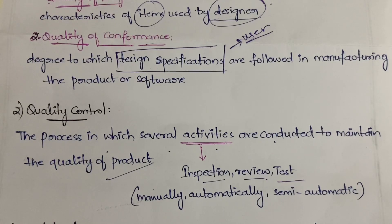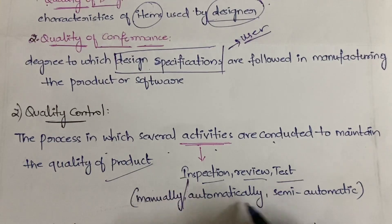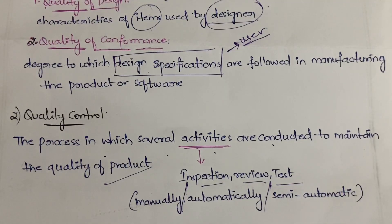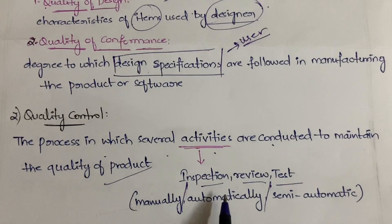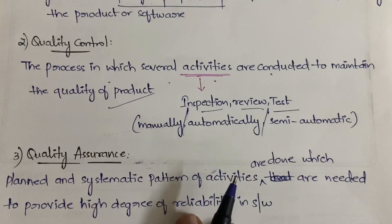Review means once the software is done and submitted to a reviewer, you perform the review activity. Testing is when the software moves to the testing phase after everything is finished. These activities — inspection, review, and test — can be done manually, automatically, or semi-automatically, meaning using both manual and automatic techniques.